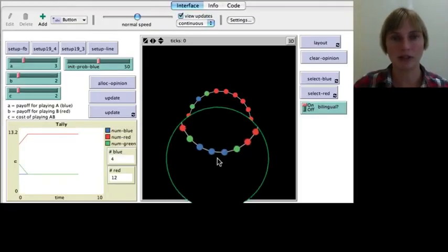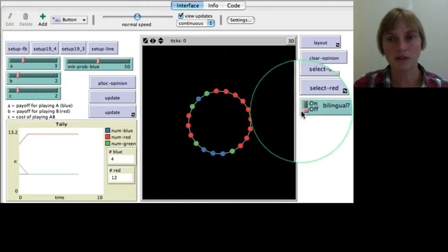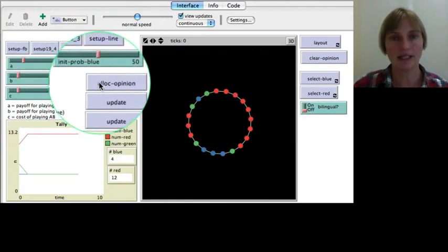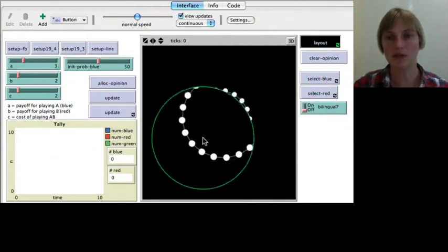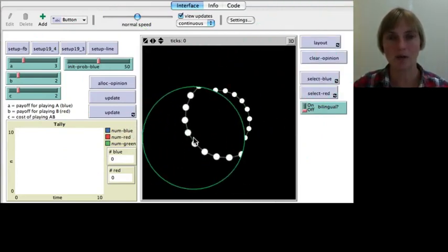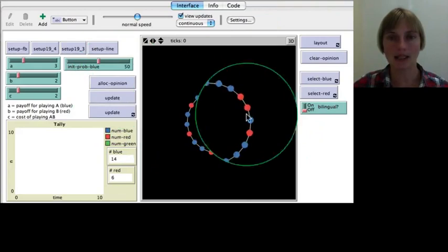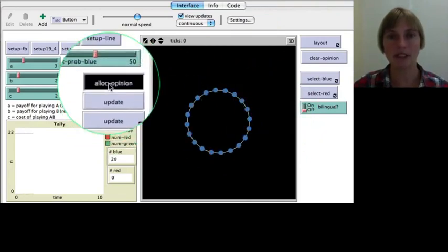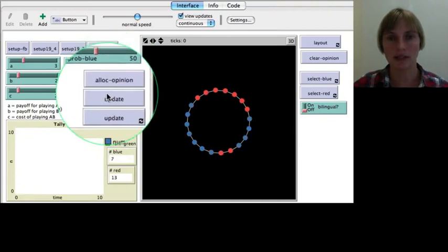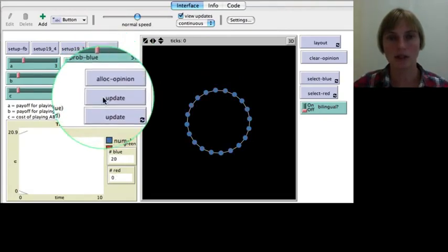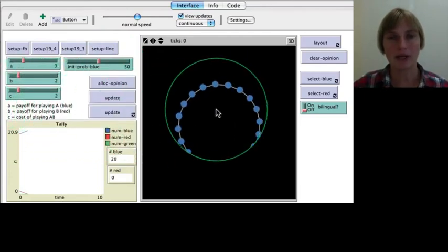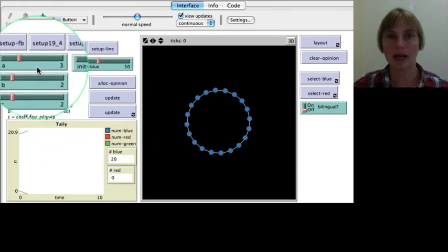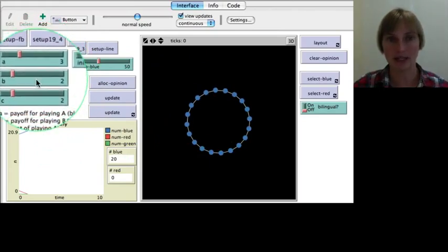So, let's try this on a line. So, switching back over to NetLogo, I'm going to, first of all, I'm going to turn off bilingual and I'm going to, well, this is what you might first see when you do set up line, but if you just lay out, you'll see that it's a nice ring lattice, in fact. And we can allocate the opinion at random and then we can update. So, just observe what's going on. Let me allocate again. Right? And so, great. So, we have A is the payoff for playing blue, and in this case, the payoff for blue is higher than the payoff for red.